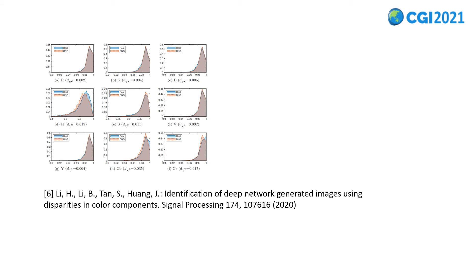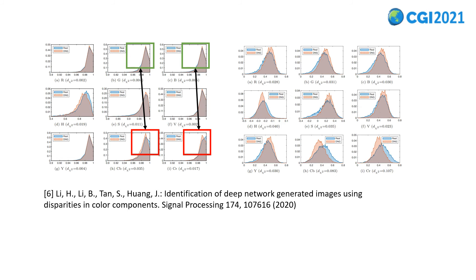When it comes to residual information, previous work has proved that the residual information of YCrCb has obvious difference. As the histogram shows, the gray box is the difference of RGB space, and the red box is the difference of YCrCb space. The picture on the right is the result of residuals. From these two figures, it is obvious that the residual information in YCrCb space can be used as an effective feature to detect manipulation faces.